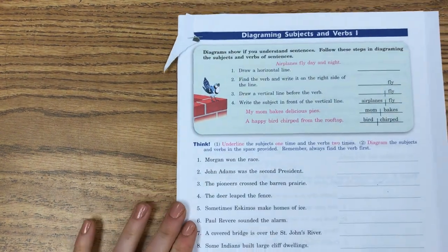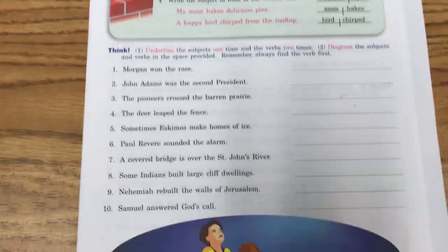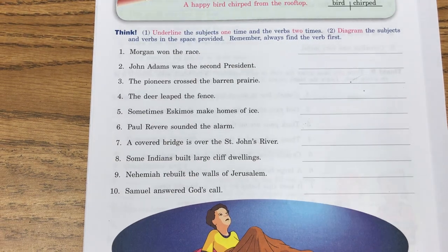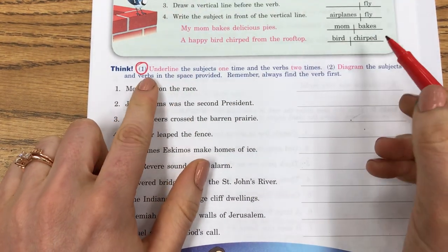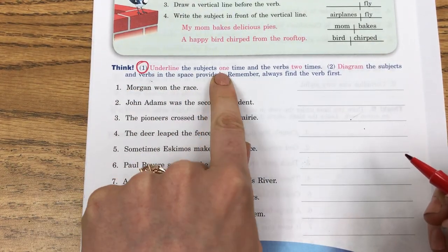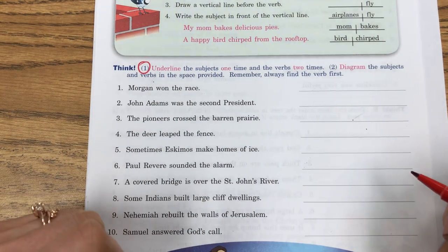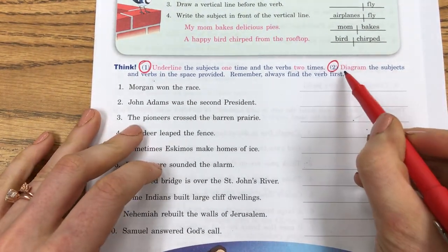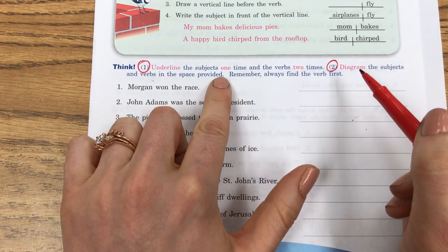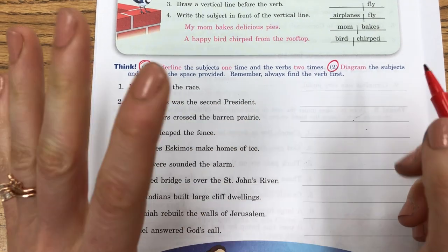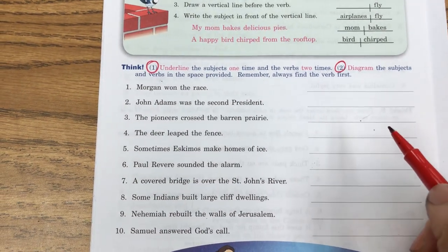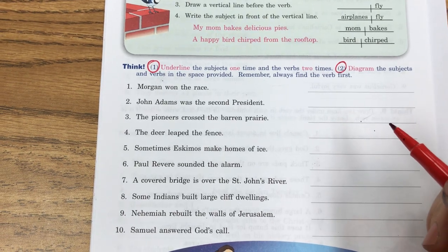Your worksheet today looks like this. I'm going to do one together with you. If we look at our directions: number one says underline the subject one time and the verb two times — we know how to do that. Our second direction is to diagram the subjects and verbs in the space provided. It says remember, always find the verb first. I don't always do that because I think it's really nice to ask who and what.